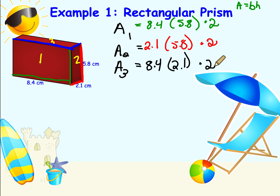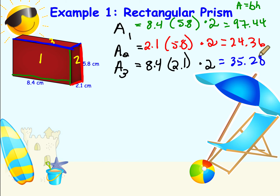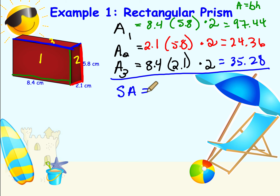Now I've substituted and I'm ready to evaluate. The first pair of rectangles gives 97.44, the second pair gives 24.36, and the third pair gives 35.28. The last step is to find the sum. Using SA for surface area, adding those together gives 157.08 square centimeters.